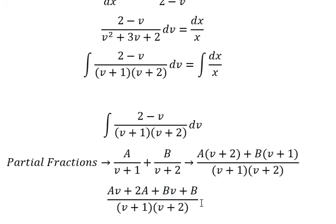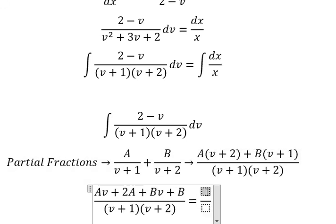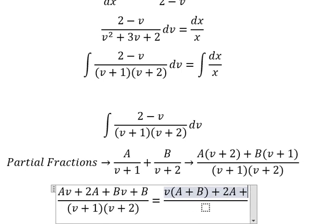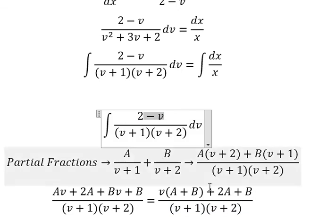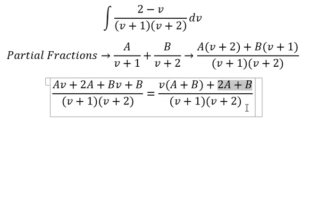Next we need to arrange based on the term of v. So if we look carefully, we have negative v, that means A plus B equals to negative number 1. 2A plus B should be equal to number 2. And now we create the system of equations.